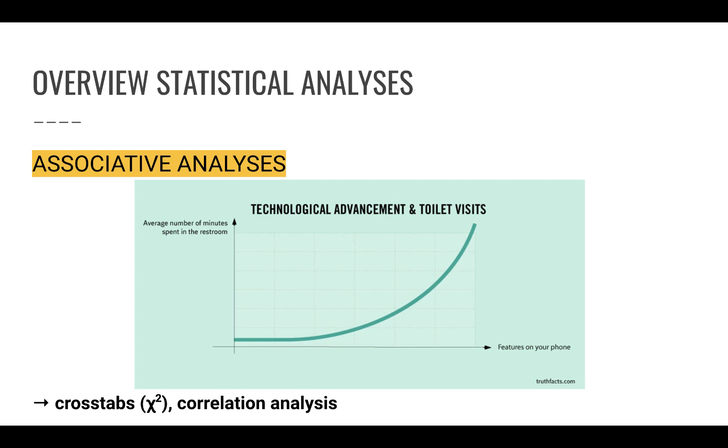Associative analysis allows you to look into relationships between variables in your sample. For example, is there a relationship between how much a company spends on advertising and their overall profitability? Is there a relationship between how credible a speaker is and compliance of an audience with that message? Or is there a relationship between how much time you spend on the toilet and how good you are at Candy Crush? All of these require associative analysis. Some of these we will cover in Marketing 470 are cross-tab chi-square and correlation analysis.